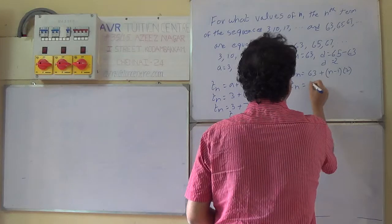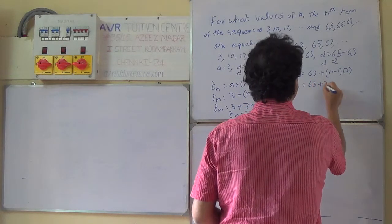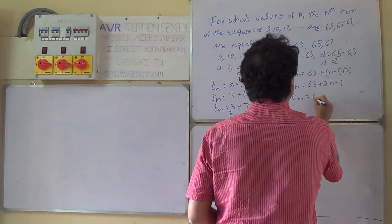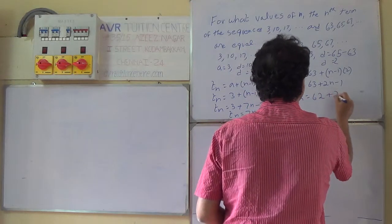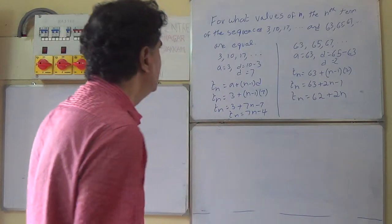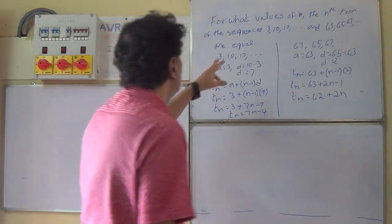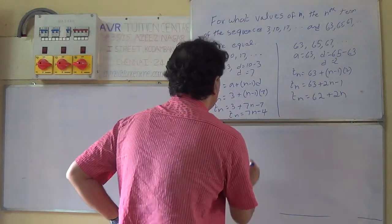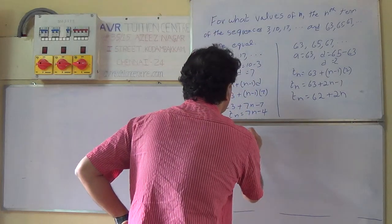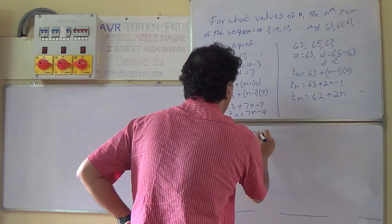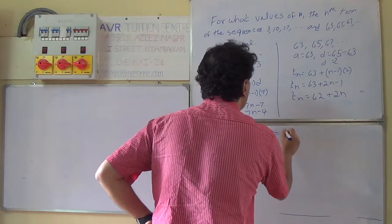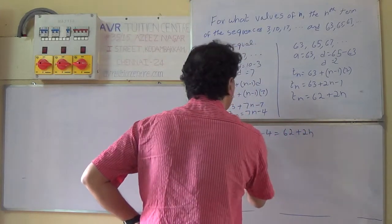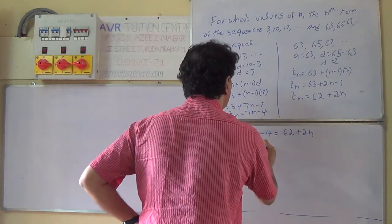tn equals 63 plus 2 times n minus 1. tn equals 62 plus 2n. For what value of n are these two sequences, the nth terms, equal? According to the problem, 7n minus 4 equals 62 plus 2n.